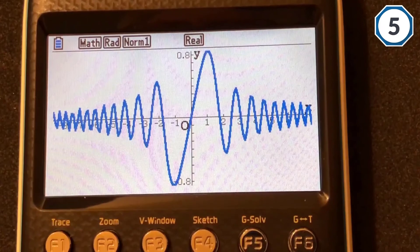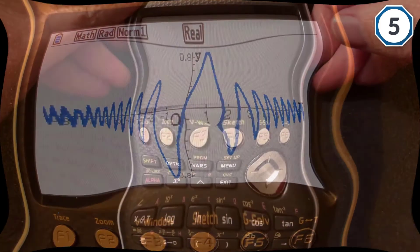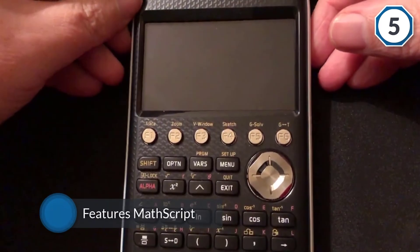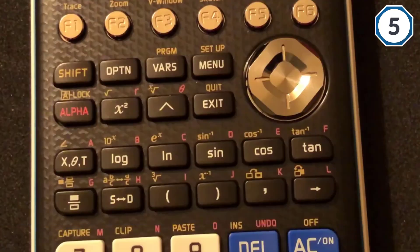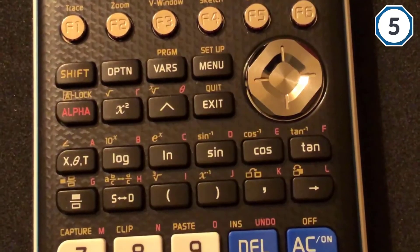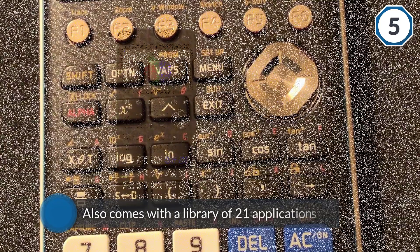This features MathScript that displays mathematical expressions in the same way that is written in the book. It also comes with a library of 21 applications which covers the integral set of mathematics. This requires four AA batteries.